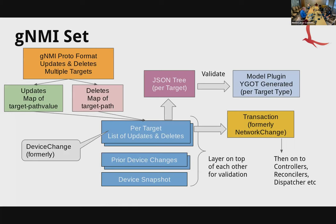This is about how GNMI sets work. Starting from the top, you begin with a GNMI set. GNMI is pretty simple — it has three methods: get, set, and subscribe. What's passed in is a format defined through protobuf, but it's really elemental — paths, elements, and values — a generic schema for specifying configuration. When a GNMI set comes in, we break it up into two groups: updates and deletes.